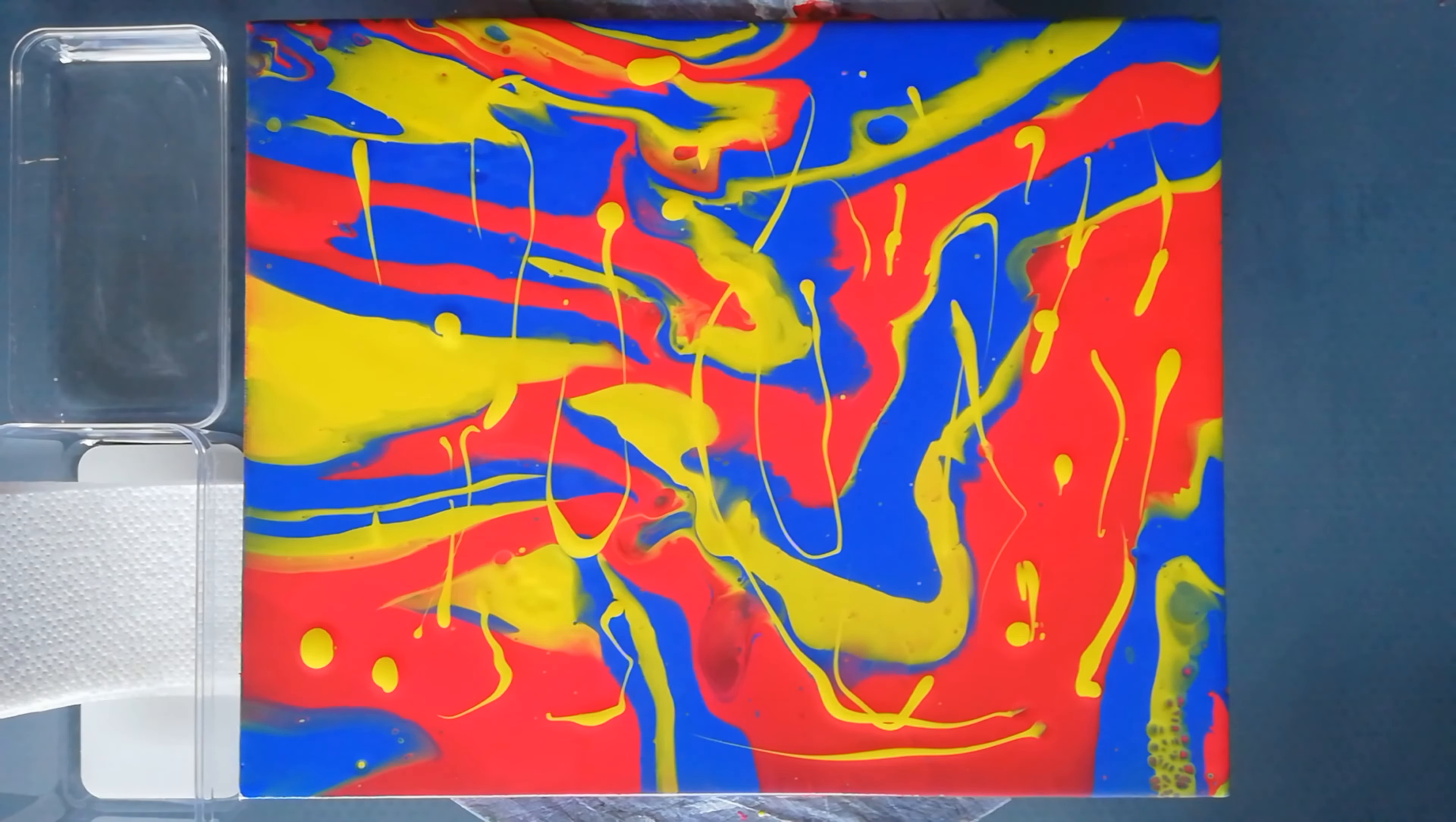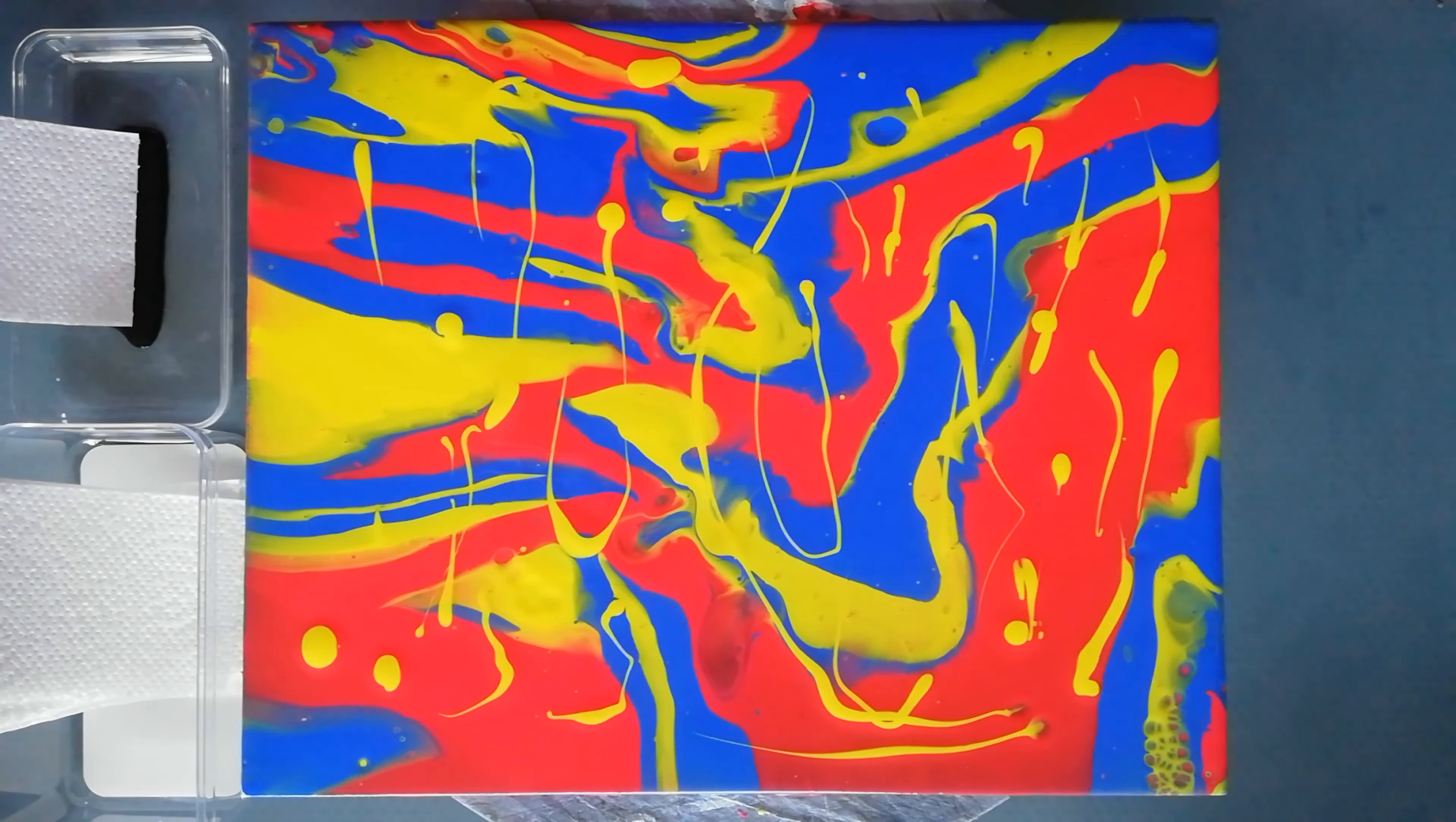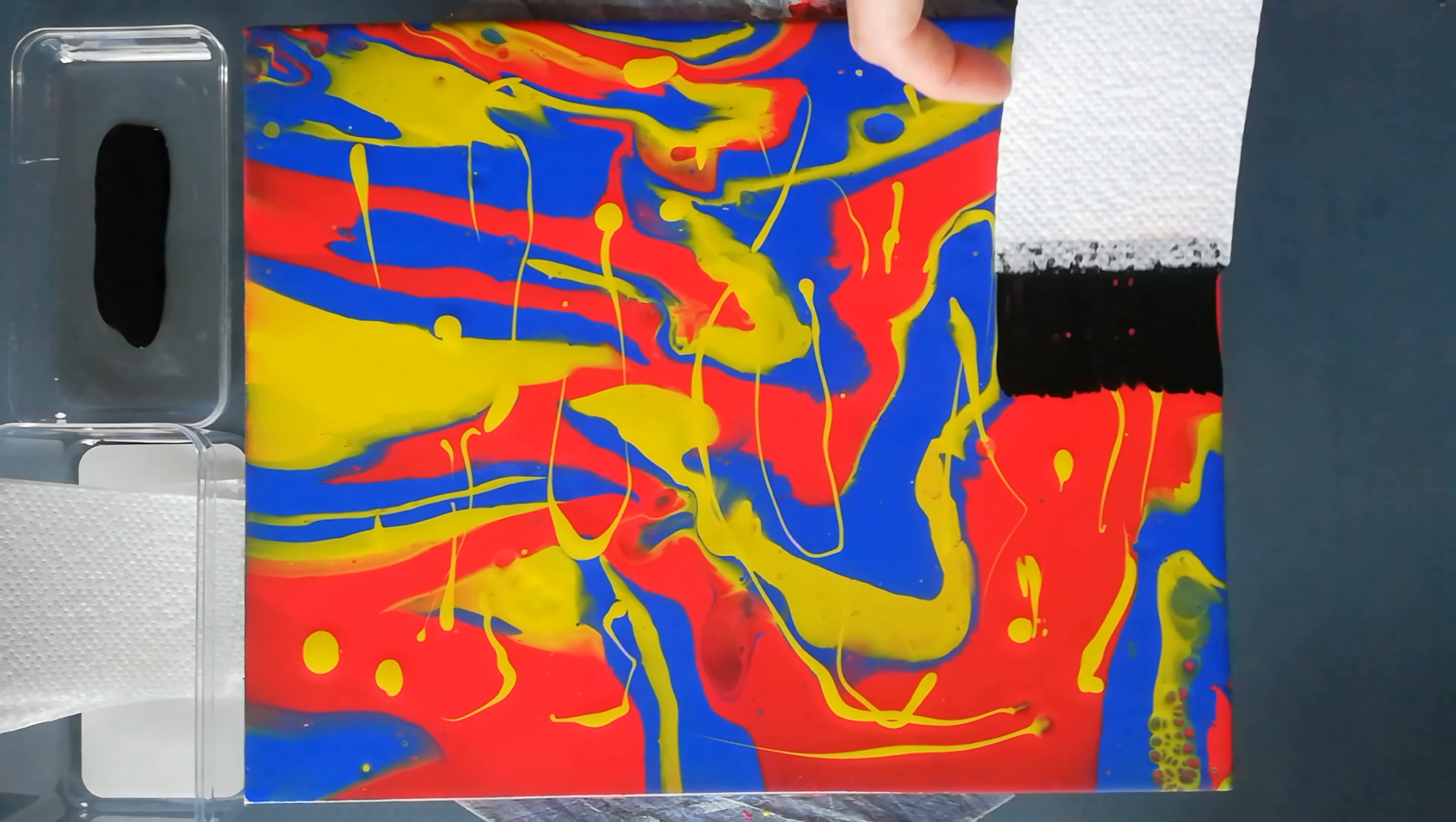So this time I'm going to swipe with black instead of white. I thought it would give a nice contrast. I'm just gonna add it to my little dish. I'm gonna be swiping with some paper napkins. I'm just gonna add a little bit of the swiping color to it, place it on, and pull.